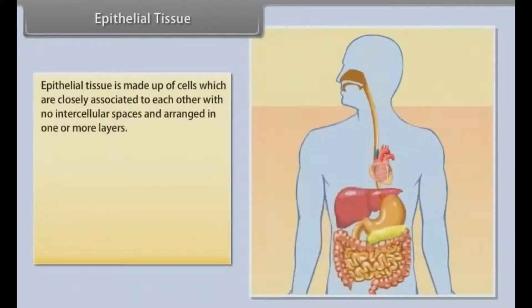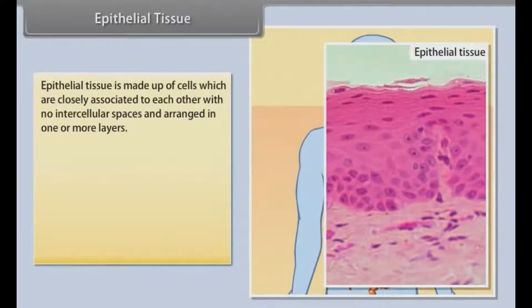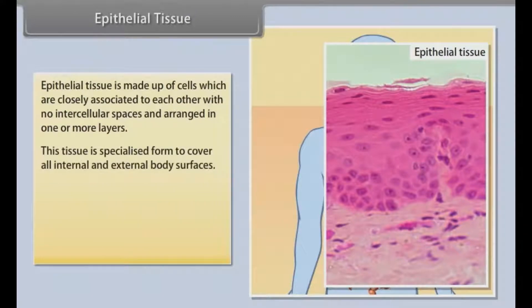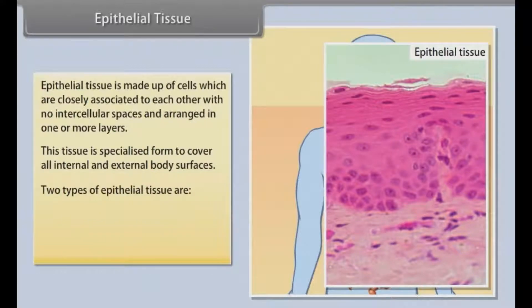Epithelial tissue. Epithelial tissue is made up of cells which are closely associated with no intercellular spaces and arranged in one or more layers. This tissue is a specialized form to cover all internal and external body surfaces.